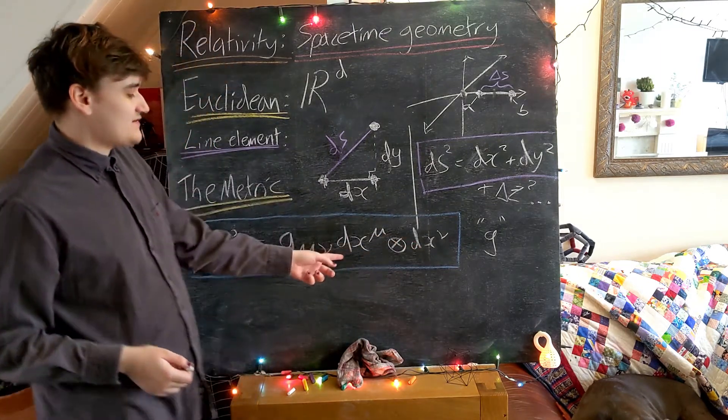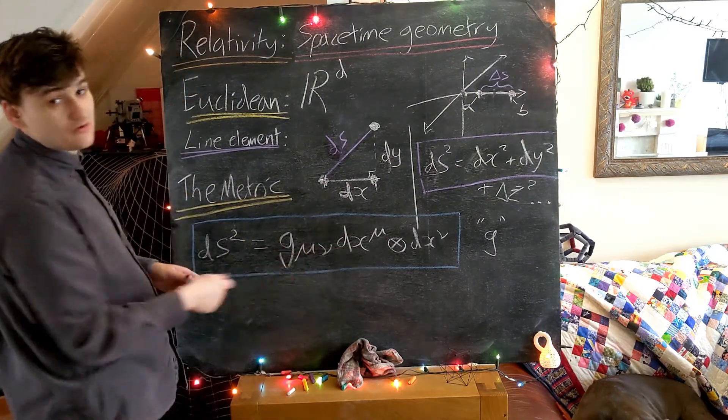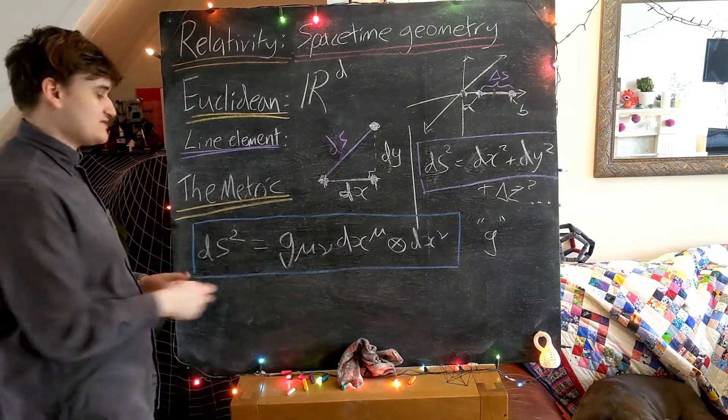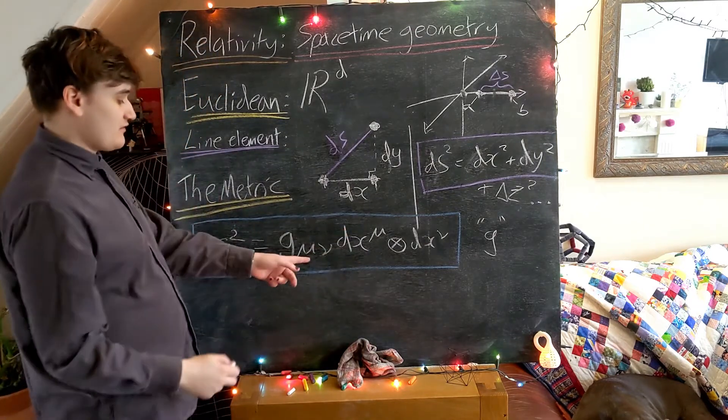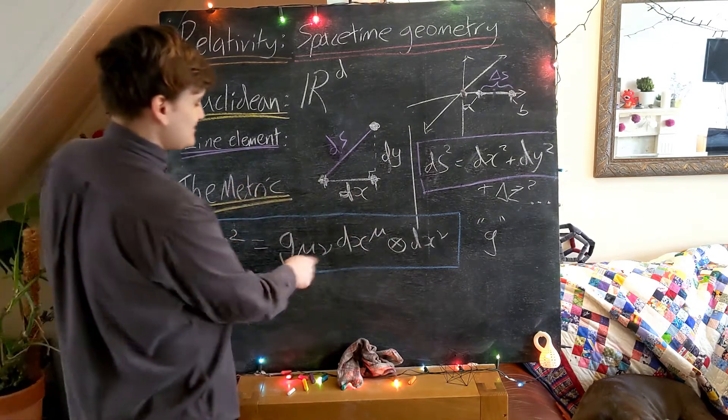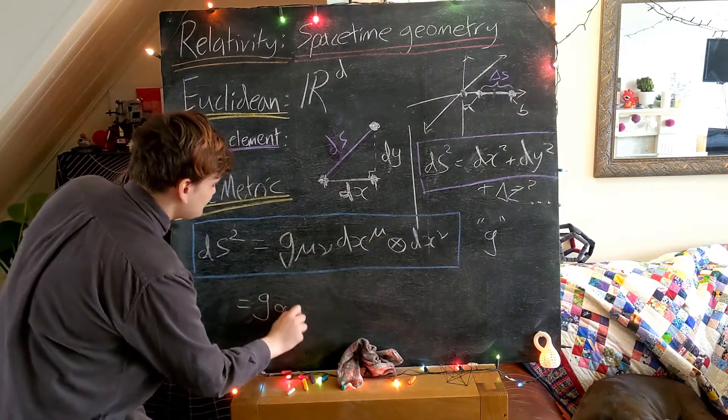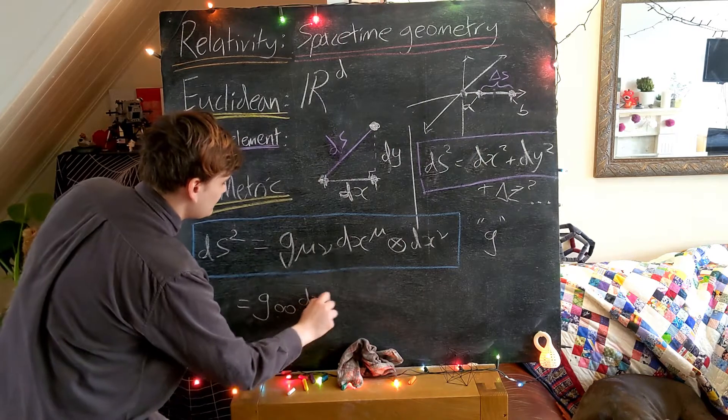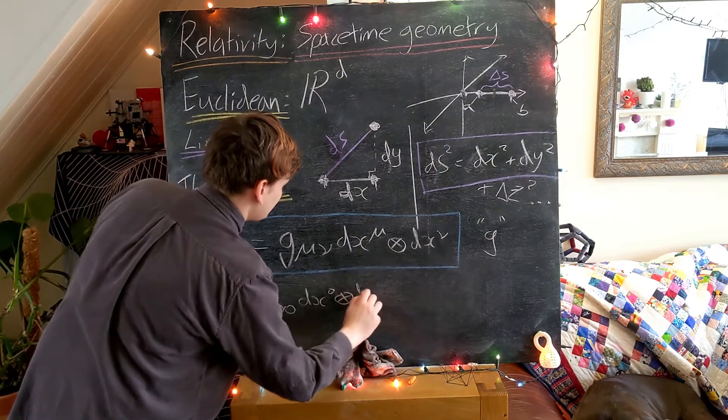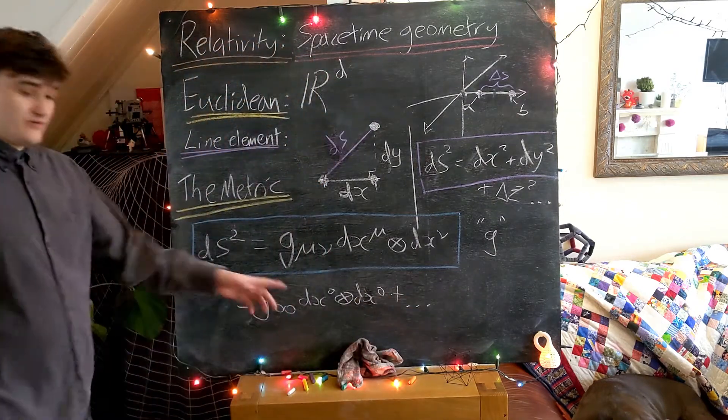We have our dx, which are the basis one forms. And then we have our g_mu_nu, which are components. So this thing, of course we're using the Einstein summation convention. If we have a lower and an upper index, that's summed. So this expression is just a big kind of list. Starting with g_0,0, dx_0, tensor product, dx_0, and so on with all the other components.